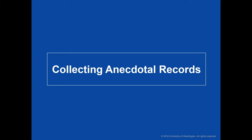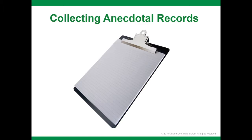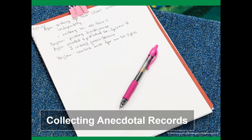Let's move on to how to collect anecdotal records. It's important to be realistic about recording observations. Teachers cannot expect to record everything that occurs in their classroom or record something about every child every day. One easy method for collecting anecdotal records is to place a clipboard with notepaper or cards in various areas of the room. Teachers and assistants can write down records as they observe children. When writing materials are available where needed, it is easier to pause and note what children are doing and saying.